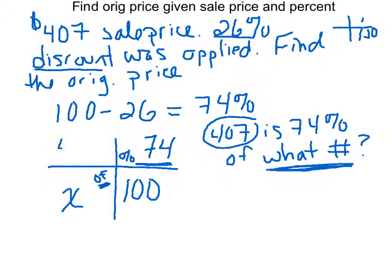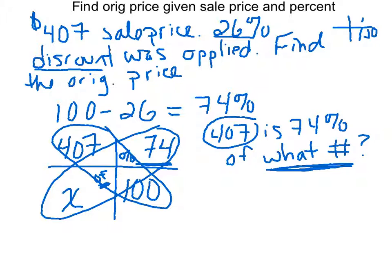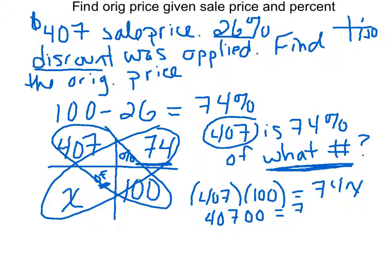This 407 goes up here because it's the last box. And now to solve this, we just cross multiply. So 407 times 100 is going to equal 74X. This gives us 40,700 equals 74X.